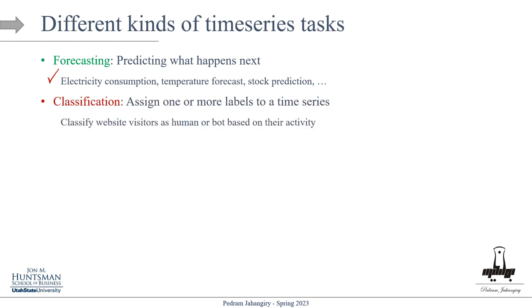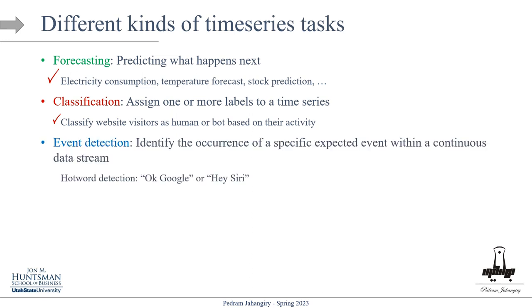The second task is classification — time series classification. The goal is to assign one or more labels to a time series. For example, you want to classify whether website visitors are human or bots based on their activity. You're collecting features over time and want to classify them as human or bot. The next one is event detection. A commonly used example is hot word detection.